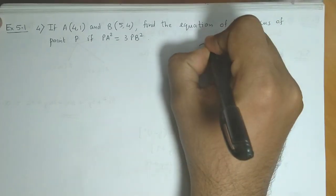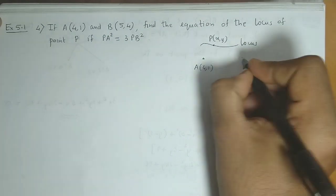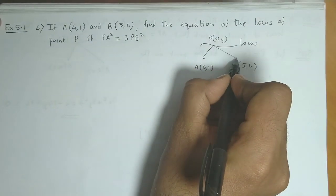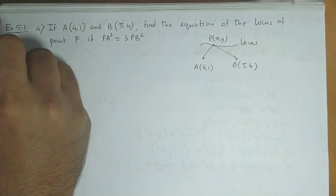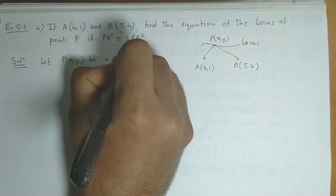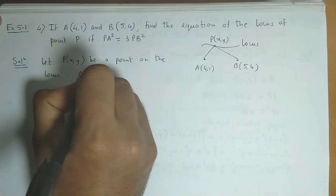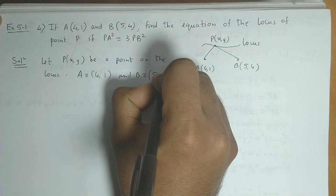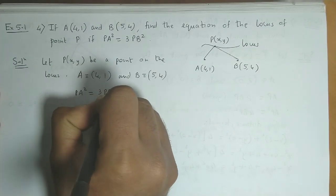We put point P and assume its coordinates are (x, y). Point A has coordinates (4,1) and point B has coordinates (5,4), and the PA and PB relationship is already given. PA squared is 3 times PB squared. So let P(x,y) be a point on the locus. A has coordinates (4,1) and B has coordinates (5,4). The relation given is PA squared equal to 3 times PB squared.